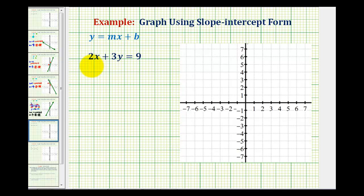We want to graph the equation of the line 2x plus 3y equals 9 using the slope intercept form of a line, which is the form y equals mx plus b.